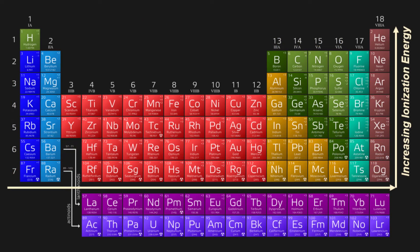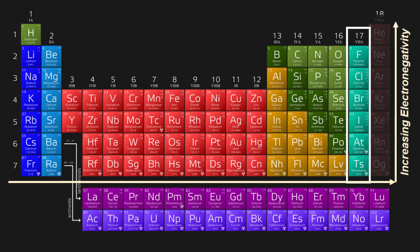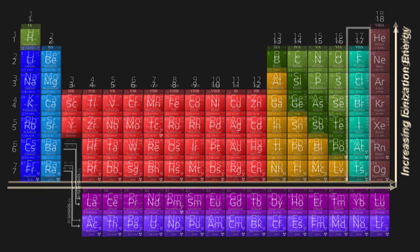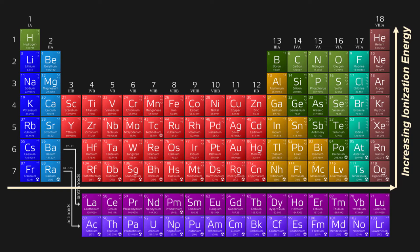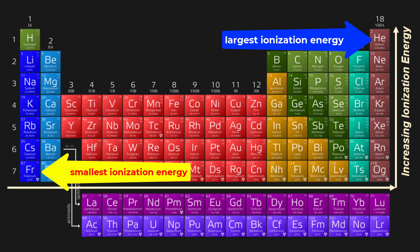It should make sense why the size trend mirrors the increasing ionization energy trend shown on the periodic table. While this trend mirrors that of increasing electronegativity, there's one difference: electronegativity does not include the noble gases, but ionization energy does. Electronegativity is an element's thirst for electrons, and noble gases have a perfect balance, so they don't have measurable electronegativities. But noble gases absolutely have ionization energies — it's just very hard to remove an electron from them. Helium, being the smallest element, has the largest ionization energy, and francium, being the largest, has the smallest.